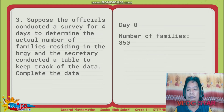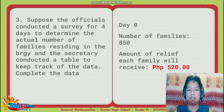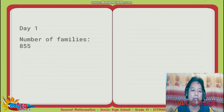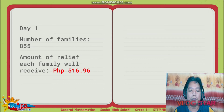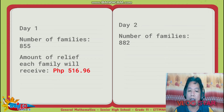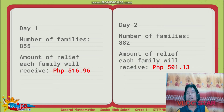For Day 0, number of families is 850 (approximation), and the amount of relief each family receives is 520 pesos — from 442,000 divided by 850. For Day 1, the surveyed number of families is 855, and the amount each family receives is 516.96 pesos. For Day 2, the number becomes 882 families and the relief amount per family is 501.13 pesos.